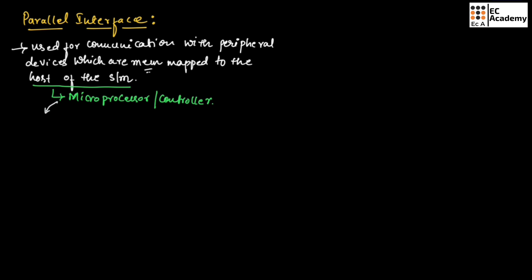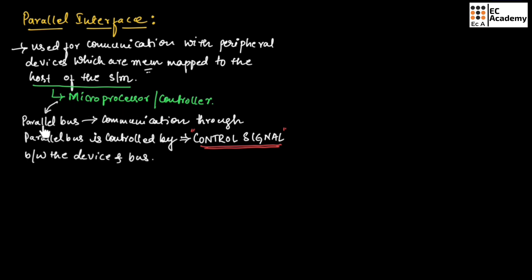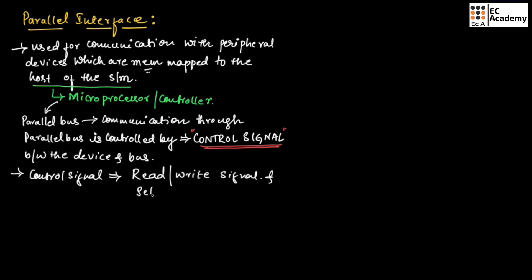The host microprocessor or microcontroller of an embedded system contains a parallel bus, and communication through the parallel bus is controlled by the control signal interface between the device and the bus. The control signals for communication include read or write signals and also a select signal.